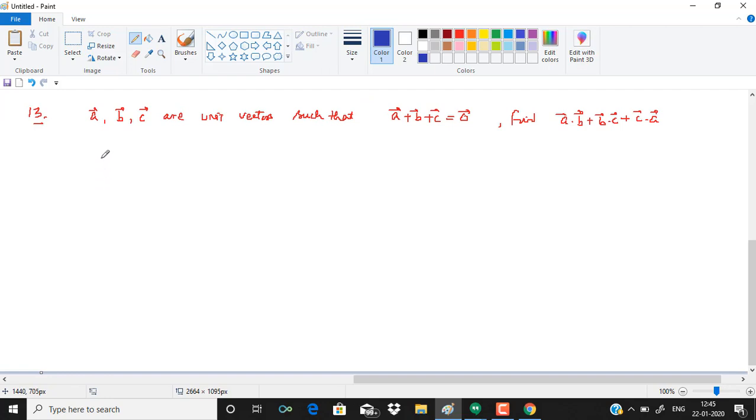In question number 13, we have 3 vectors a, b, c which are unit vectors. Unit vectors means their magnitude is 1. And their sum is given as 0. We need to find a dot b plus b dot c plus c dot a. Since sum is 0, a plus b plus c has magnitude 0.